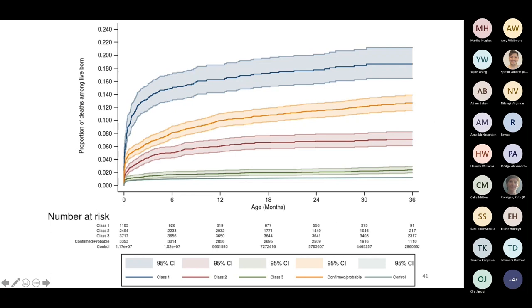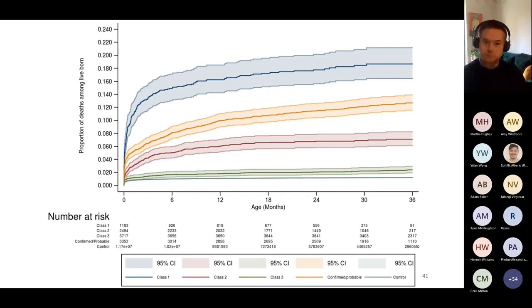This is the Kaplan-Meier curve showing survival. You see the confirmed cases — the orange — and the suspected cases — the blue. It's worse than the yellow, though because there are many more children in that group and it's the children whose cases weren't confirmed. However, a very high proportion of those children had microcephaly. It's very sad.